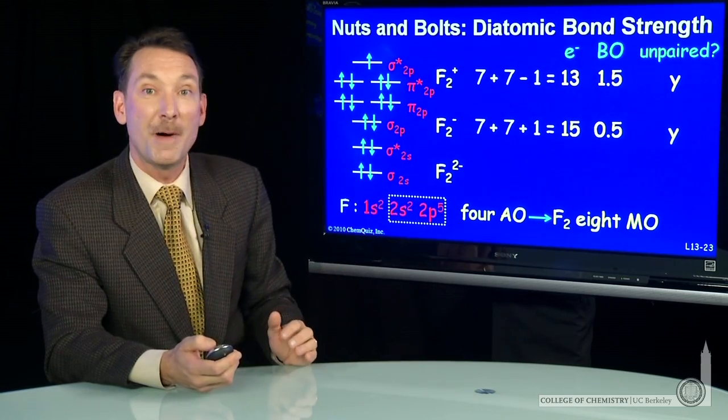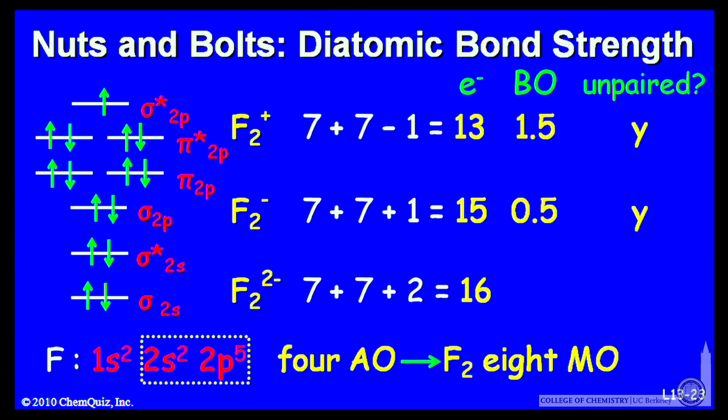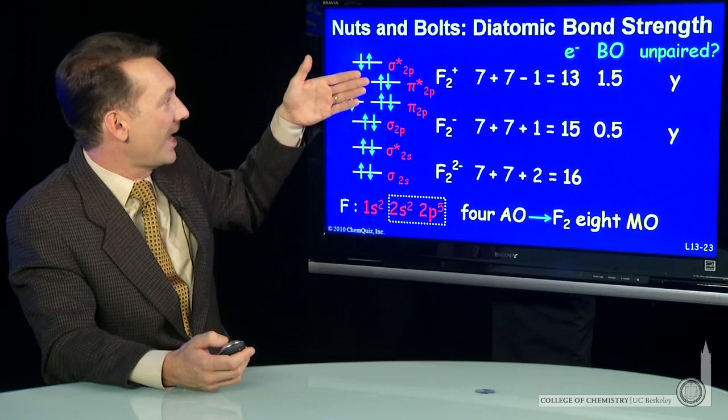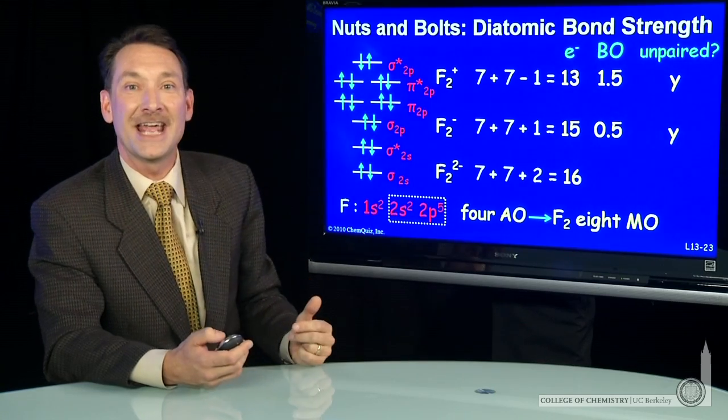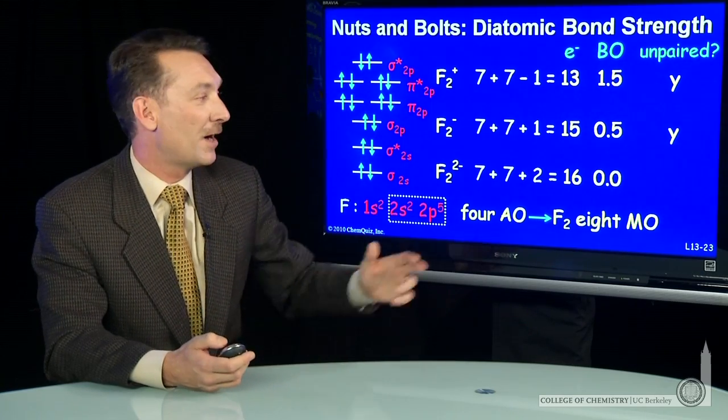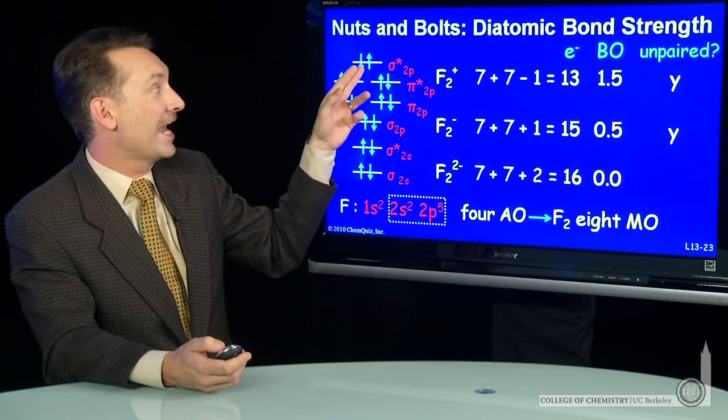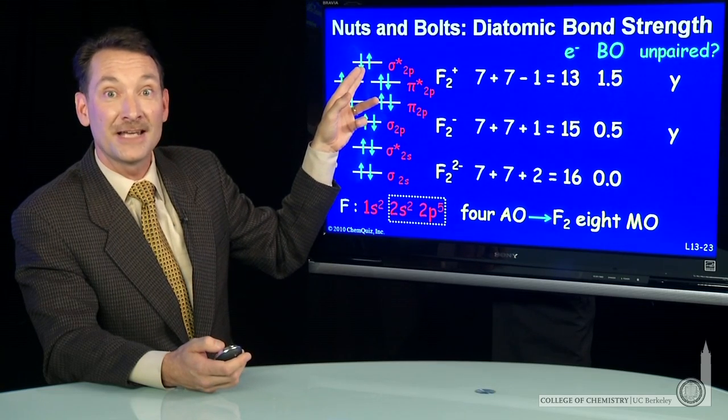What about F2 minus 2? That's going to have the seven electrons from each fluorine, plus two extra electrons for 16. We add one more to our 15. That'll pair that last one. And it'll completely fill this. So now I have an equal number of bonding and antibonding electrons, so a bond order of 0. And I'm not paramagnetic anymore. Every electron is paired.